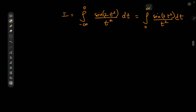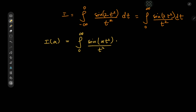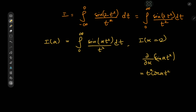And now for Feynman's trick. We define the integral function I of some parameter α as the integral from zero to infinity of sine of α t squared divided by t squared dt. This is quite nice because if you differentiate partially with respect to α, the sine of α t squared term gives cosine α t squared, and by the chain rule you also get a t squared factor, which cancels the t squared in the denominator. Also, we have a nice initial value: I at α equal to zero equals zero, because we have sine of zero which is zero, so the entire thing collapses to zero. This is going to come in handy later.